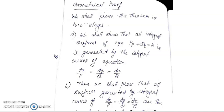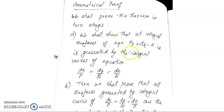The geometric proof will be proving the theorem in two stages. In the first part, what we are going to show is that all the integral surfaces are generated by the integral curves. If you are given the equation Pp plus Qq equal to R, if you take any solution of this equation, that is an integral surface. So all integral surfaces are generated by the integral curves of the equation.